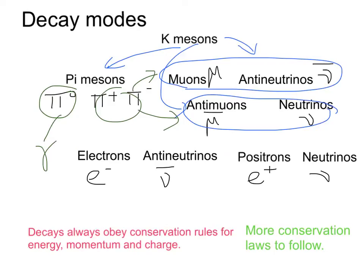Muons and anti-muons decay into electrons and anti-neutrinos, or positrons and neutrinos.